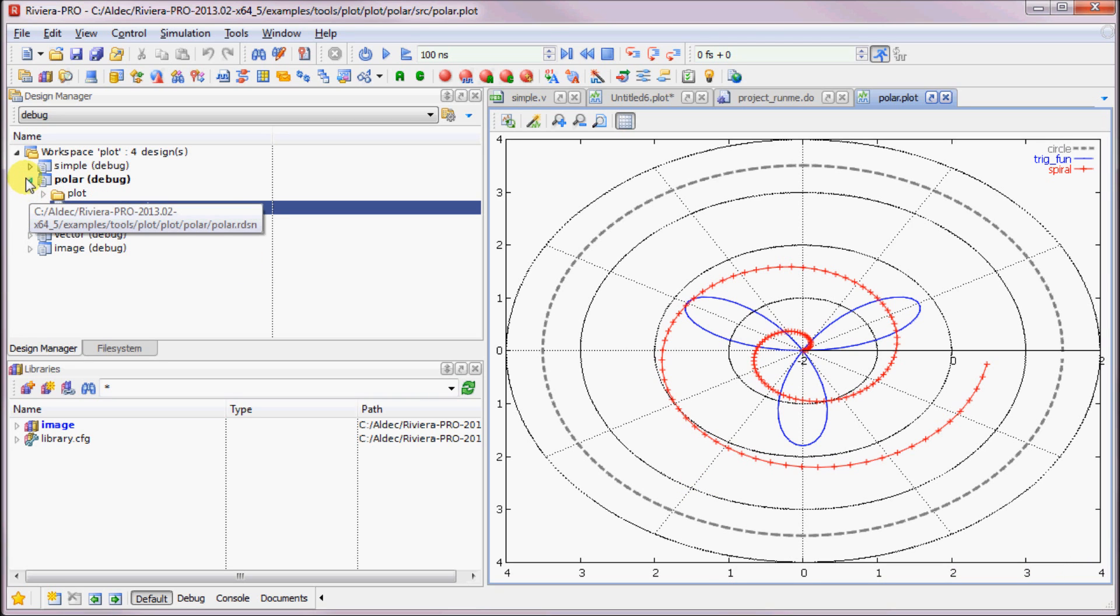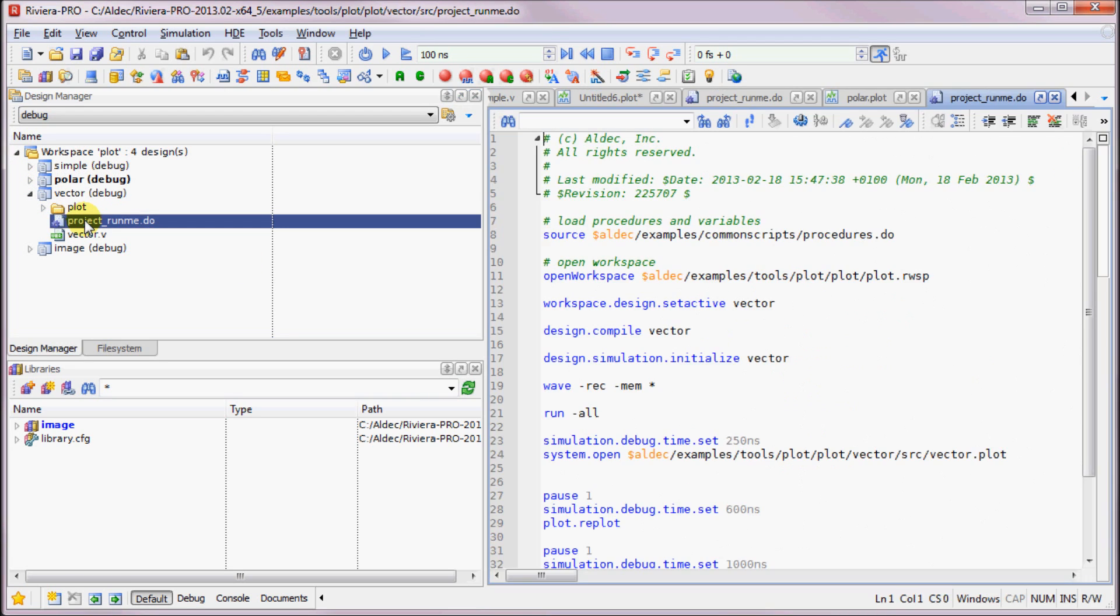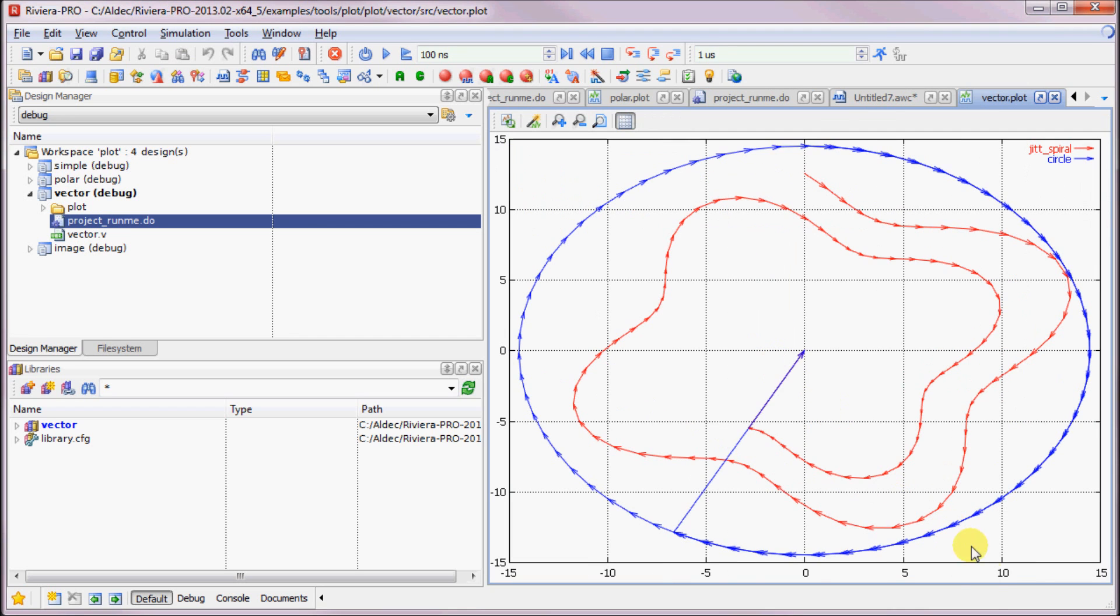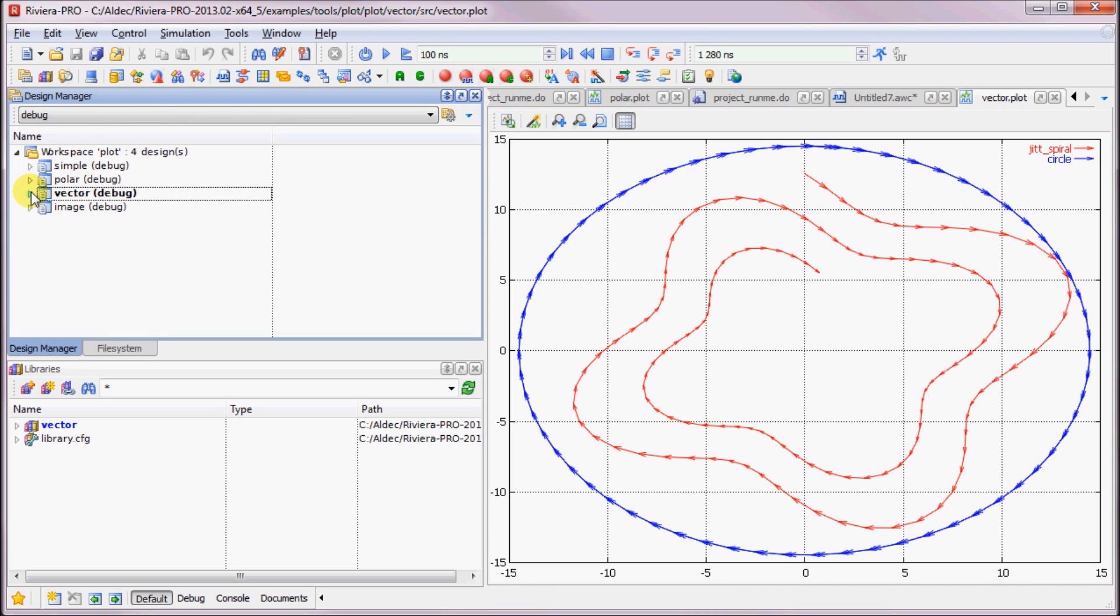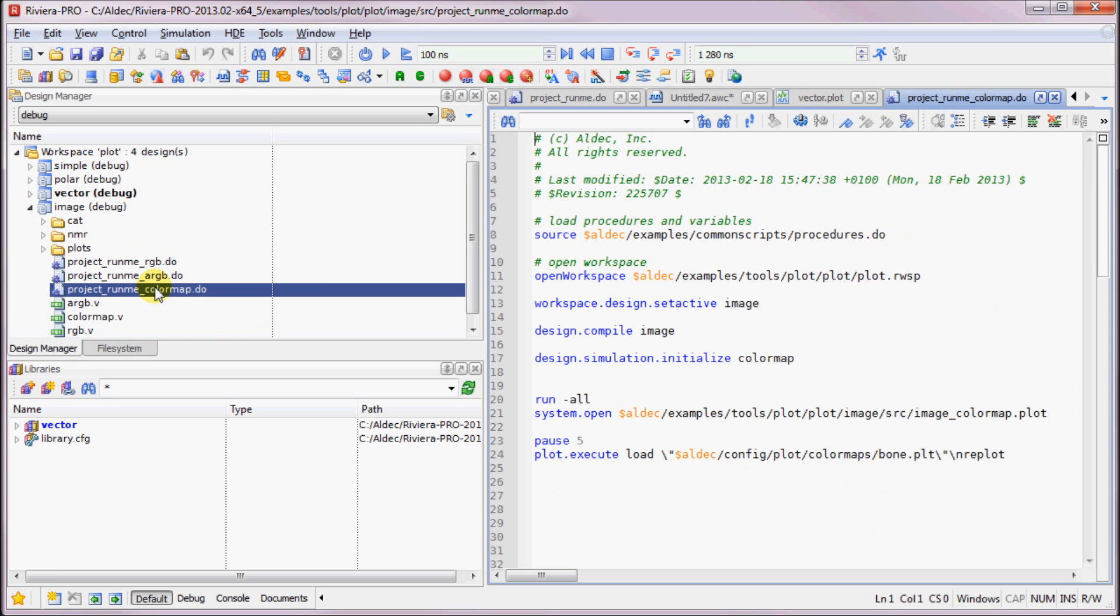Now let's try the vector example where the trajectory is displayed. In this plot you can take a look at how the CNC head would travel in real life. And using the trajectory feature you can see the direction in which the CNC head would be moving.